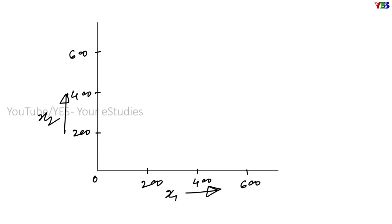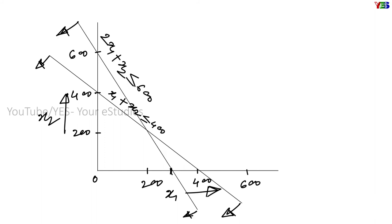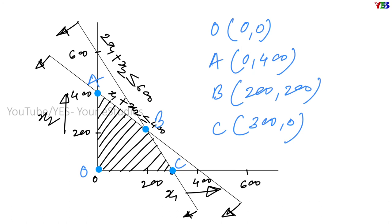Now we'll solve the problem by graphical method. We take x1 on the x-axis and x2 on the y-axis. Next we draw lines for the constraint equations: the line for x1 plus x2 less than or equal to 400, and the line for 2x1 plus x2 less than or equal to 600. The arrow signs on the respective lines represent that our feasible solutions lie under 400 and 600 respectively. This gives us our feasible region with four vertices representing four feasible solutions.